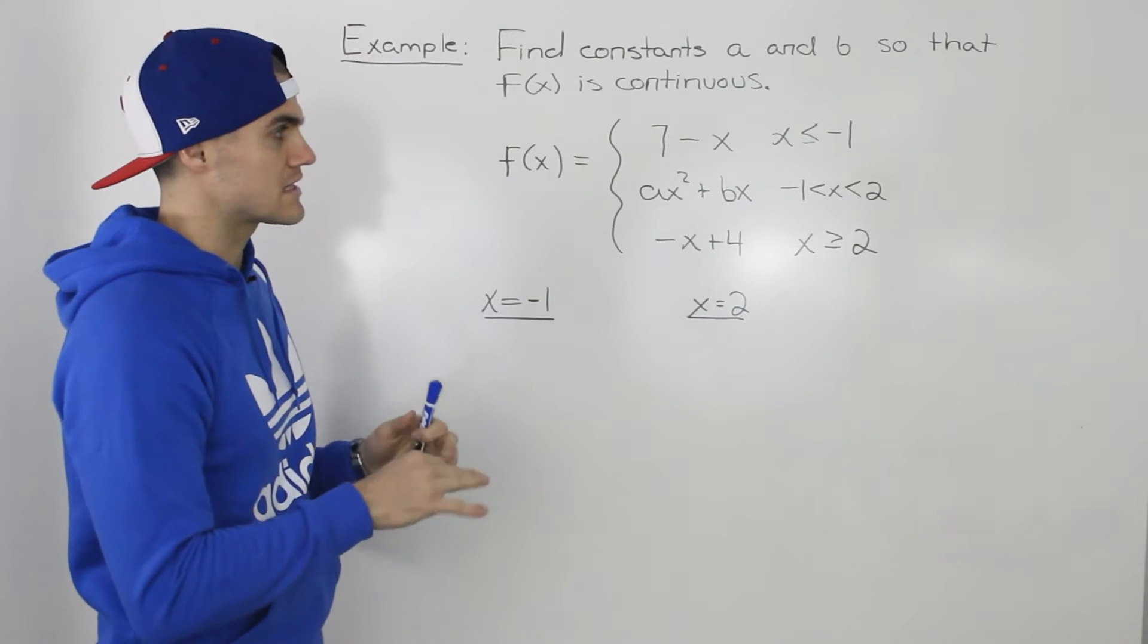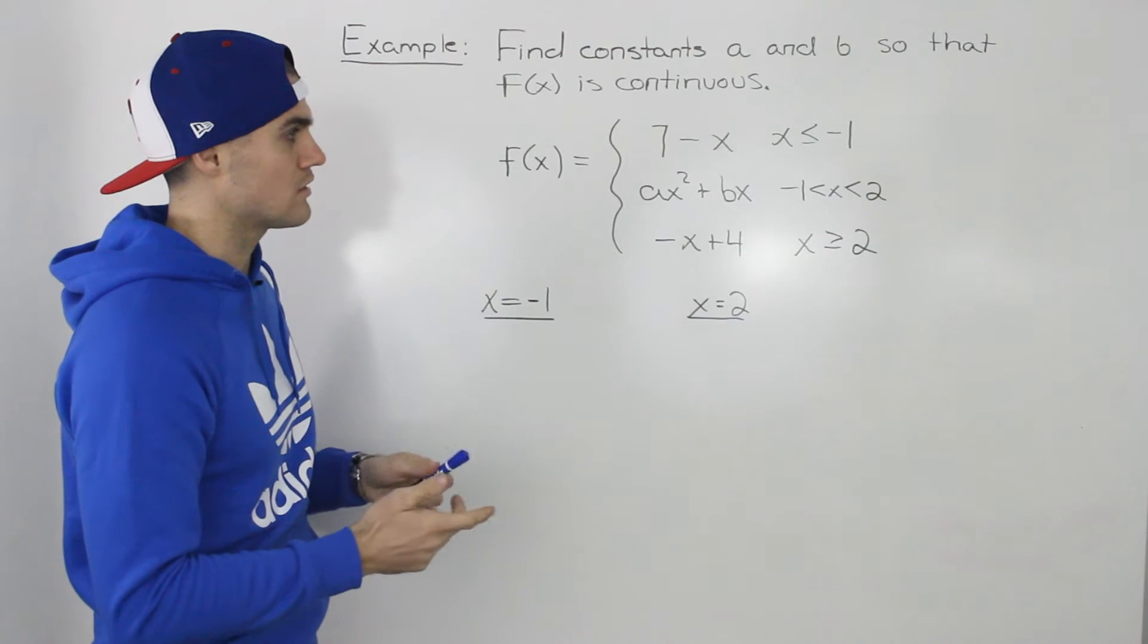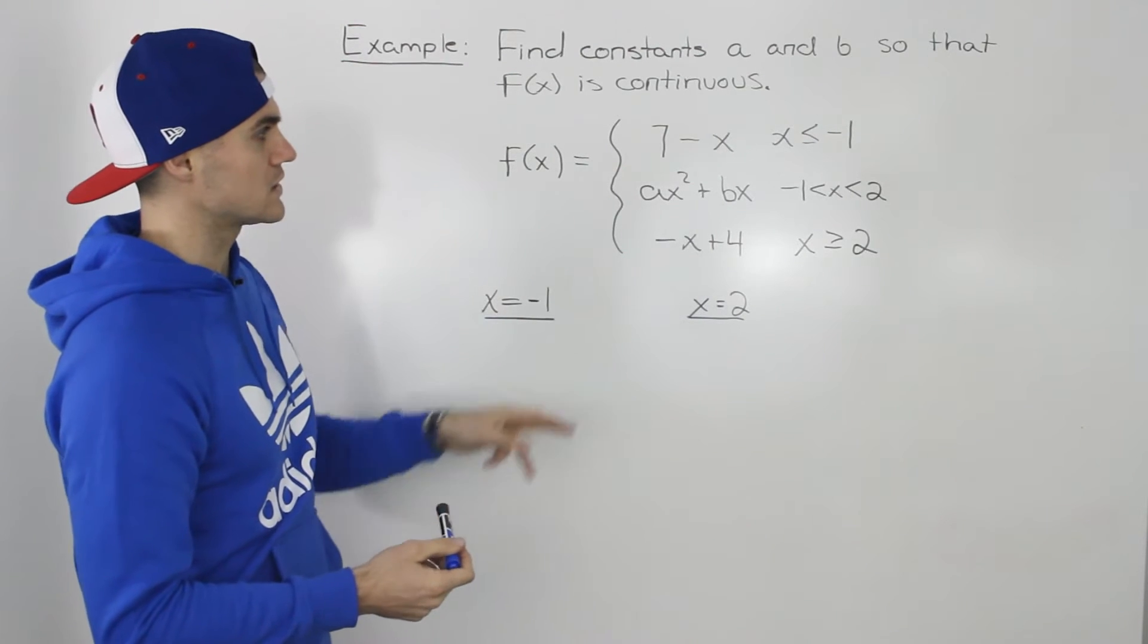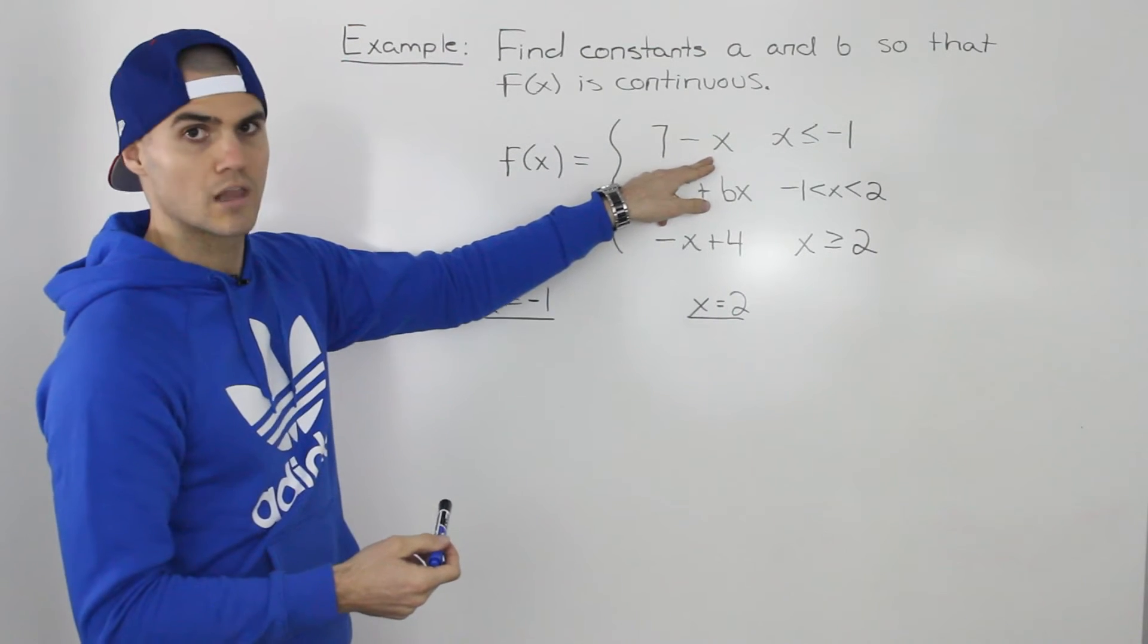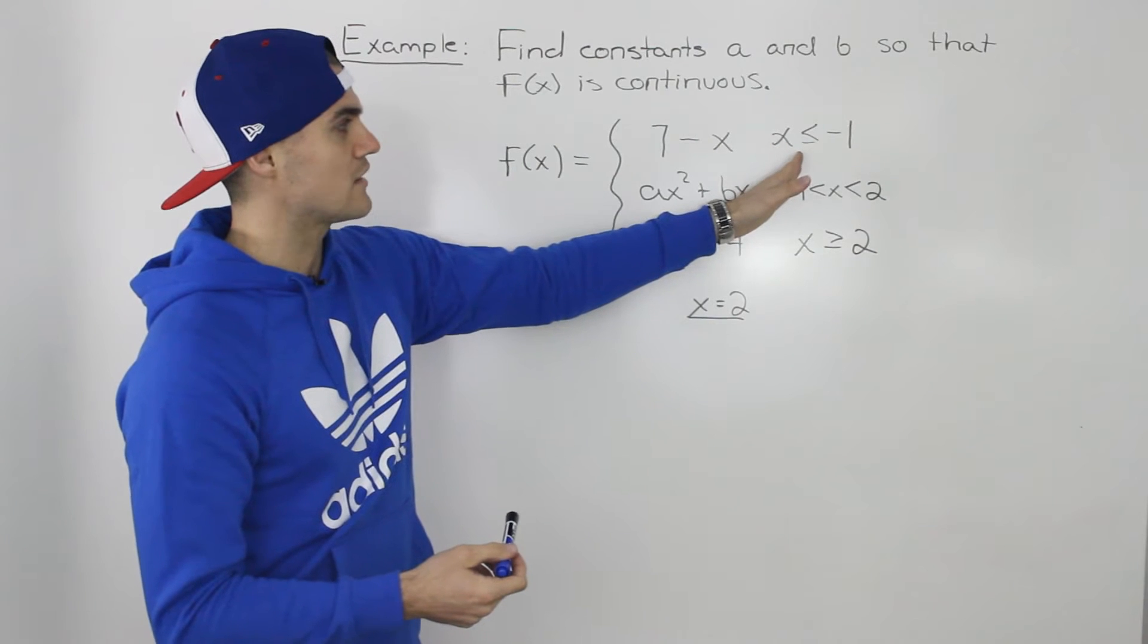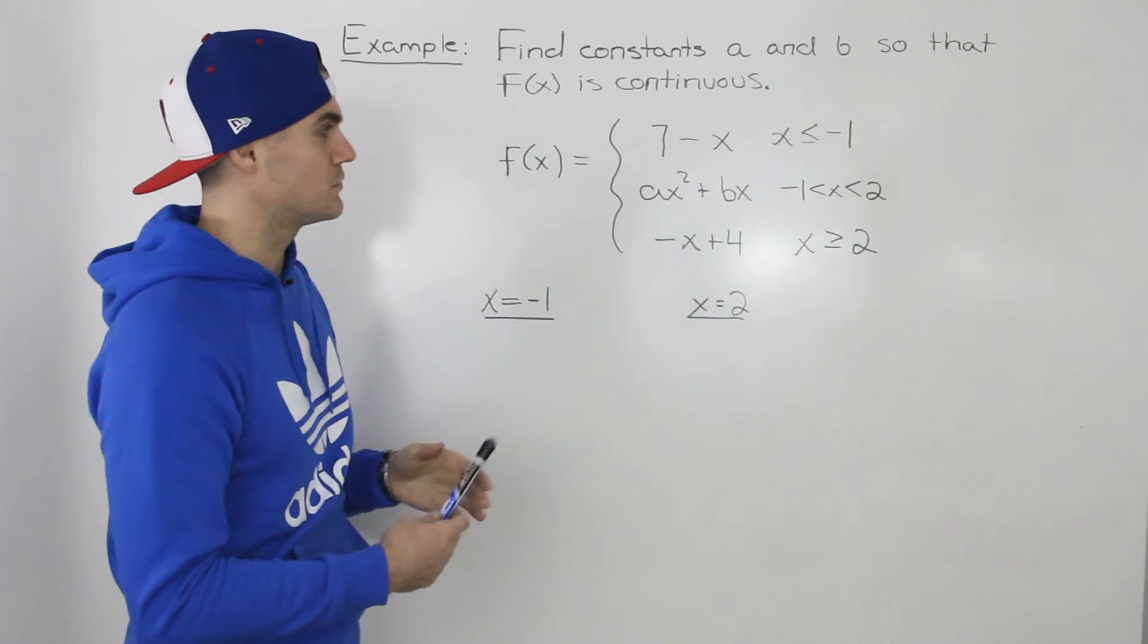Notice that at any other x values other than those meeting points, the function will be continuous. 7 minus x is just a line, so for all x values less than negative 1, the function will be continuous there.